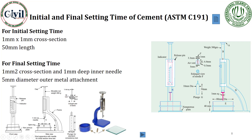You will penetrate the needle of cross-section 1x1 mm. The penetration achieved should be 5-7 mm from the bottom of the cement paste. In this way, the initial setting shows the formation of ettringite needles. At the beginning, the ettringite needles are sufficiently formed so that the penetration is hindered to 5-7 mm.